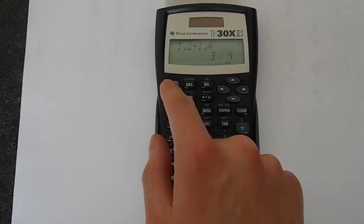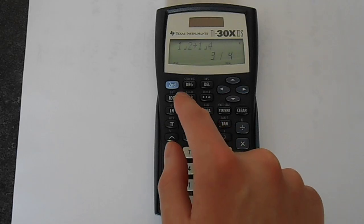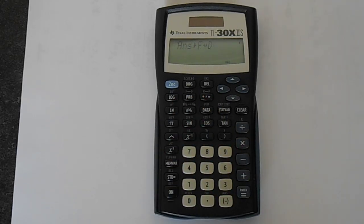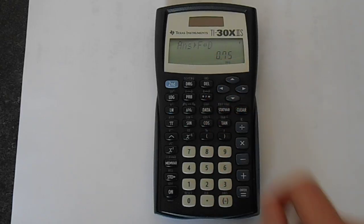To convert this we would do second function and then you've got this F to D button on the prob key and then press equals: 0.75. Now we could convert something back.